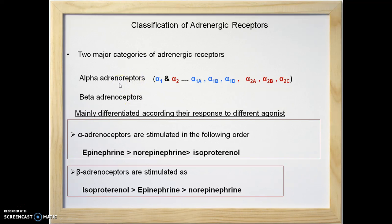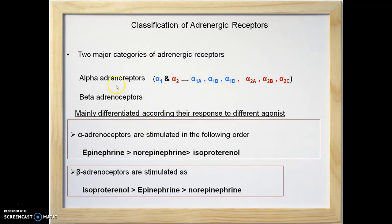Alpha adrenoreceptors are further classified as alpha 1 and alpha 2. Due to molecular biological techniques, alpha 1 is subclassified as alpha 1a, 1b, and 1d, while alpha 2 receptors are classified as alpha 2a, 2b, and 2c. Alpha 1c is missing since it was wrongly identified and has been omitted. Beta receptors are further classified as beta 1, beta 2, and beta 3, and their subtypes are also known.